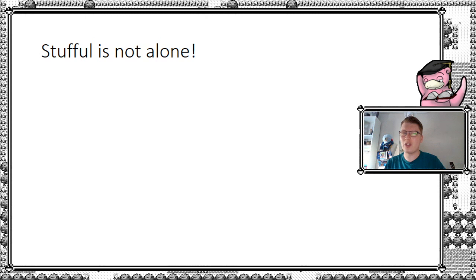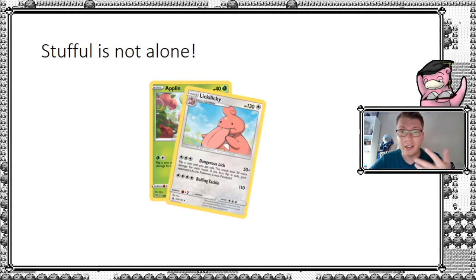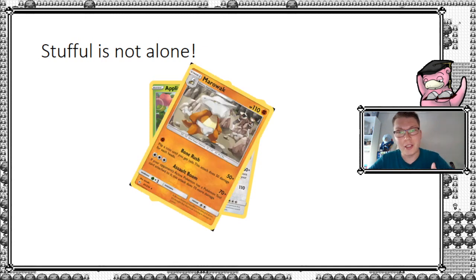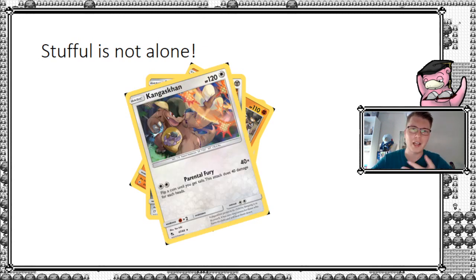So first of all, Stufful is not alone. That was just something to lure Ross Gilbert in here. Sorry Ross. So we also have like Ablin, continuous tumble, flip until you get tails again, do 10 damage of each head. We got Licky Licky, which is, well, 50 plus each head. Then we got Marowak. Well, you get the idea now. And then Ferozeed. But last but not least, we also got Parental Fury. I can kind of relate to that now, but okay, fine. Which is also just 40 of each head. They all have the same thing in common. It's flip until you get tails. And the big question is, how much damage can you actually expect such an attack to do?